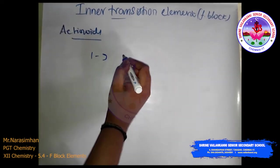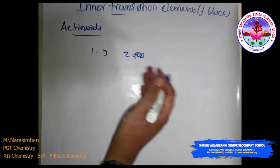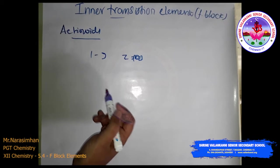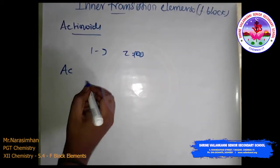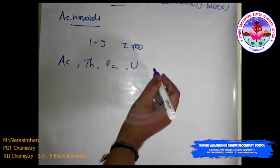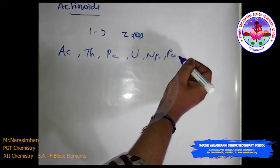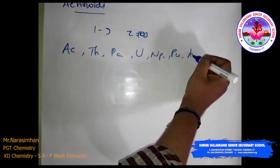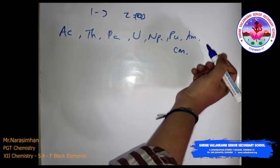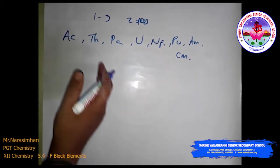For lawrencium (atomic number 103), the later members could be prepared only in nanogram quantities, making their study very difficult. The actinoid elements are: actinium (Ac), thorium (Th), protactinium (Pa), uranium (U), neptunium (Np), plutonium (Pu), americium (Am), curium (Cm), berkelium, californium, einsteinium, fermium, and lawrencium — these are the actinoid elements.